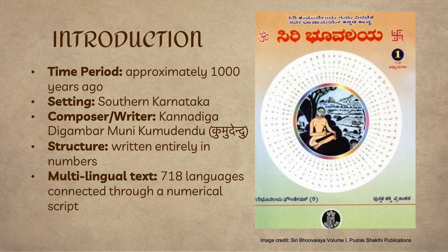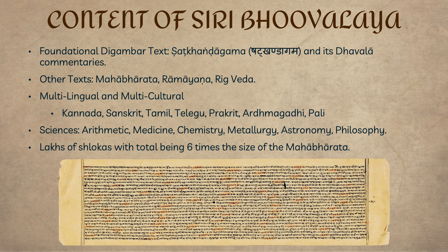Let me provide some background before that, which will allow us to better appreciate this text. This unique work is credited to Kumudendu Muni, a Digambara monk from southern Karnataka. He is believed to have composed it around 1000 years ago, though estimates range from as early as the 8th century to as late as the 15th century according to more recent research. At its core, this epic is based on several Jain works, primarily the sacred Digambara text known as Shatkhanda Agama. Amazingly, it also incorporates verses from the Mahabharata, Ramayana, Rig Veda, and countless other sources, including non-Indian ones.